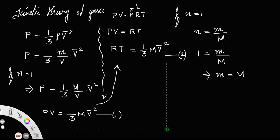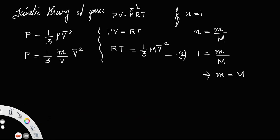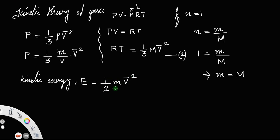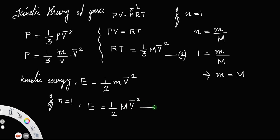Now, the kinetic energy E of one mole of gas — with n = 1, so mass equals molecular mass M — is given by E = ½Mv², where v² is the mean square velocity. Let us call this equation number 3.